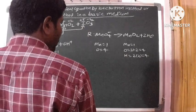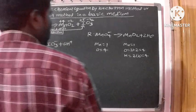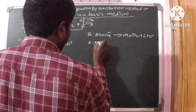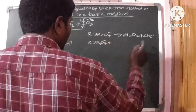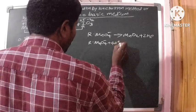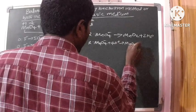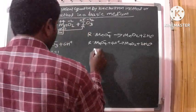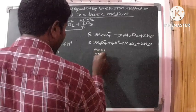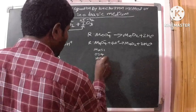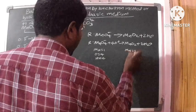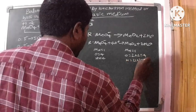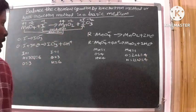Now we can balance the hydrogen atoms in the reduction half reaction. To do this, we add H⁺ ions to the reactants side. After adding 4 H⁺ ions: reactants side has Mn=1, O=4, H=4; products side has Mn=1, O=4, H=4. The number of atoms are now balanced in the reduction half reaction.